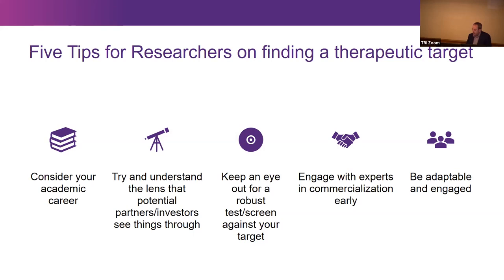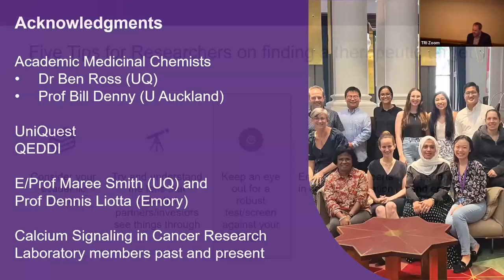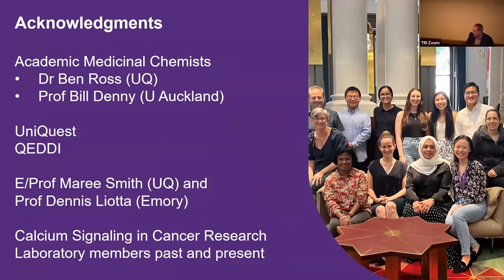To summarize my five tips: consider your academic career; try to understand the lens that potential partners see things through — probably the one I've learned most; keep an eye on a robust assay as you study your target, because that's going to be really important in drug development; engage with experts in commercialization really early; and be adaptable and engaged during the process. If I was going to pick one, it's this: keep an eye on a robust assay. Most things that haven't progressed in my research group is the lack of a really robust assay to screen a compound library. I'd like to acknowledge the medicinal chemists we've worked with, particularly Ben Ross and Bill Denny, as well as UniQuest, QEDI, Marie Smith and Dennis Leota. Thank you very much.